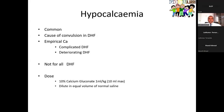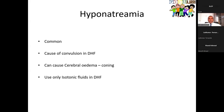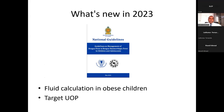Hypocalcemia is a common cause of deterioration in DHF — use empirical calcium in complicated or deteriorating DHF. Dose: 10% calcium gluconate 1 ml/kg (maximum 10 ml), diluted in equal amount of normal saline. Do not give oral calcium prophylactically to all DHF patients just after diagnosis. Hyponatremia is also common and a cause of convulsions in DHF; use only isotonic fluid in DHF. The best fluid is normal saline with 5% dextrose.